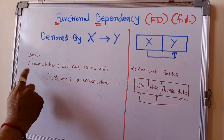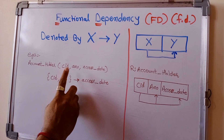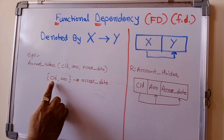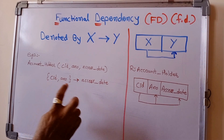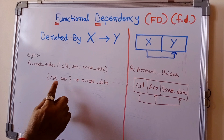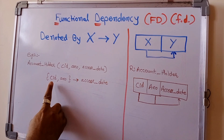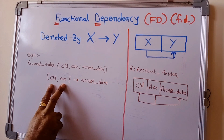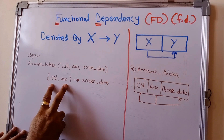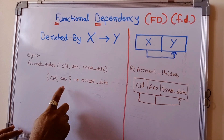Here I have taken an example of the table account_holder. This relation consists of three attributes: customer ID, account number, and access date. If we supply customer ID and account number together, then and only then we can get the access date. So customer ID and account number are the determinant, and access date is the dependent.